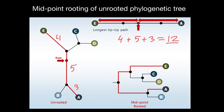This is going to be the longest path. So four plus five plus three is going to give us twelve. Twelve divided by two is going to be six. So that means that our midpoint is going to be here — six units from here and six units from here. We have found the point where we are going to place our root in this phylogenetic tree.